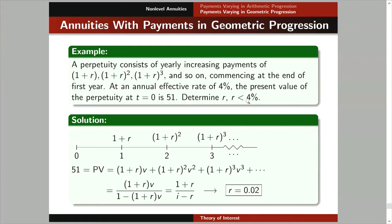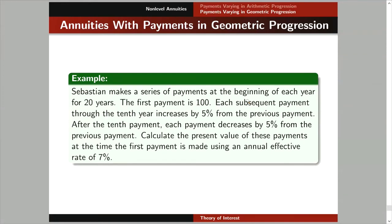We don't use any formula here — we simply recognize the pattern and apply geometric series formulas. Let's have another example. We have an annuity due — a series of payments at the beginning of each year for 20 years. The first payment is 100, and each subsequent payment through the 10th payment increases by 5%. After that, for the next 10 years, the payments decrease by 5% from the previous payment. We calculate the present value using i equals 7%.